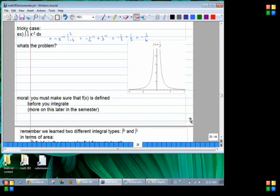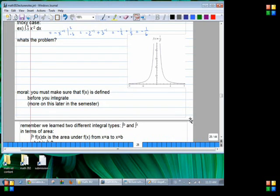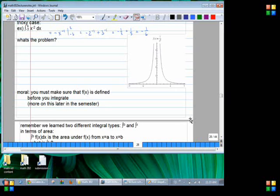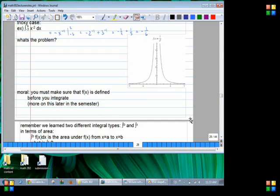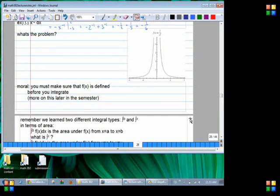So integrating from A to B in terms of area, that makes sense. That's just the area under the function from A to B, it's some number. But in terms of area, what does it mean to say we're going to integrate from A to X? What does that mean?